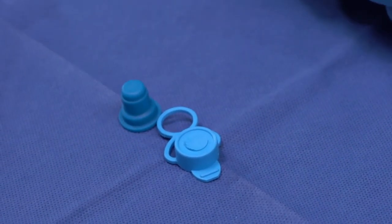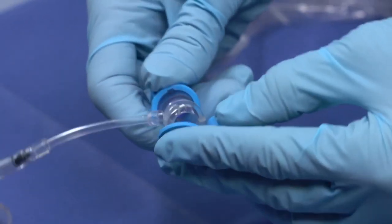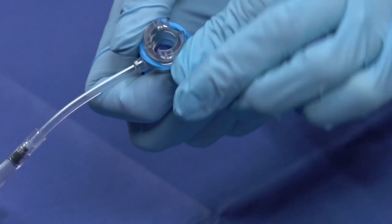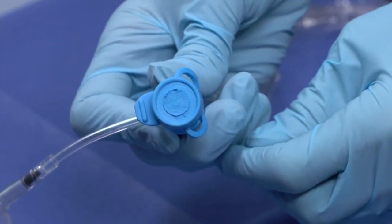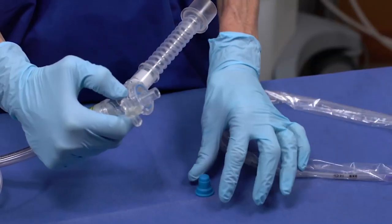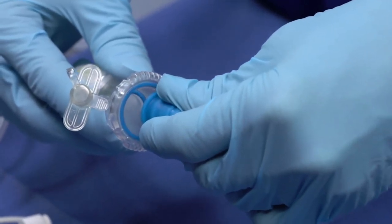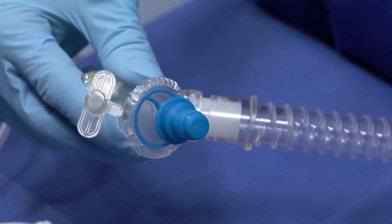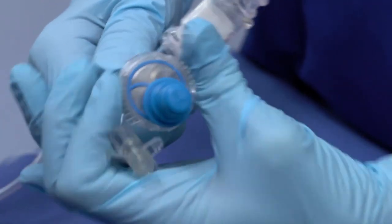Simply disconnect the suction catheter from the patient access valve when in the closed position. Use the larger sterile cap to cover the disconnected portion of the closed suction catheter. Then place the smaller self-sealing cap on the patient access valve. This self-sealing cap allows the passage of a six millimeter bronchoscope.